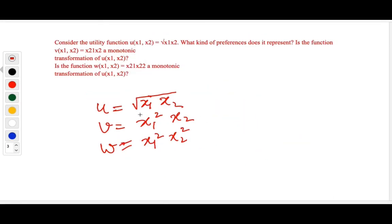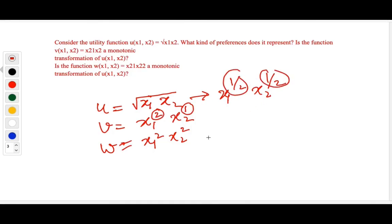Next question: you have utility functions u, v, and w. Utility u can be written as x1^(1/2) · x2^(1/2). Is v a monotonic transformation of u? Definitely not — the powers in v are different from those in u. What about w? The powers in w are the same as in u, which means u and w are monotonic transformations of each other.